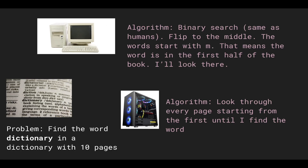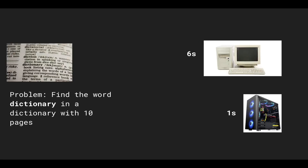The gaming computer's algorithm is a brute force naive algorithm. It starts at the first page and flips through every single page until it finds the word it's looking for. So the slow computer finishes in six seconds and the gaming computer finishes in one second.